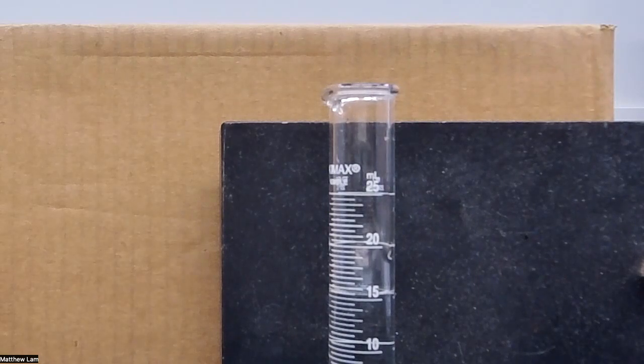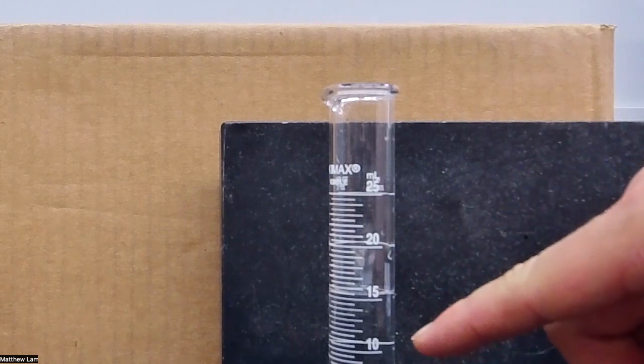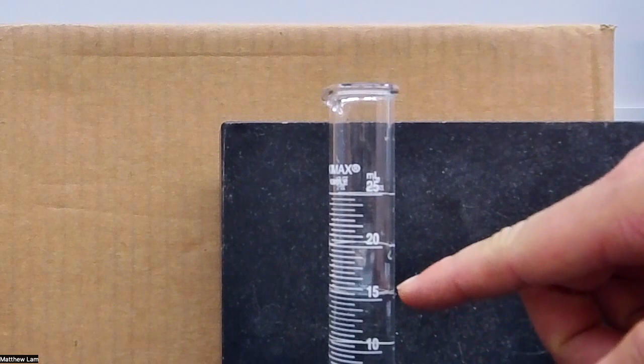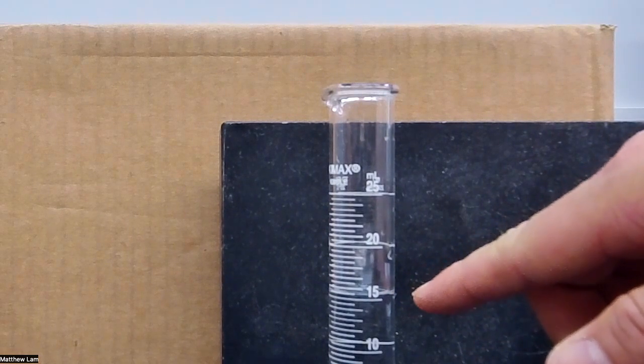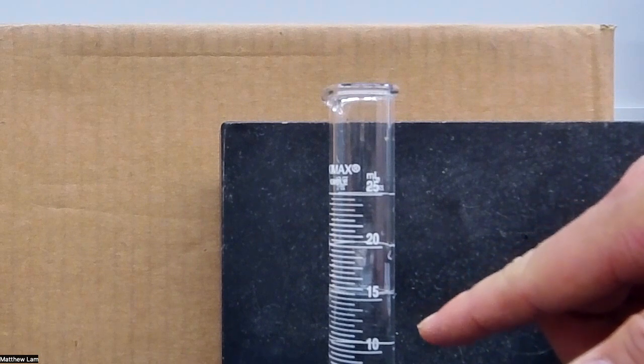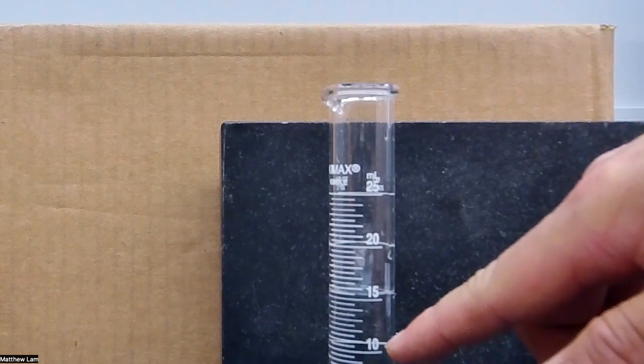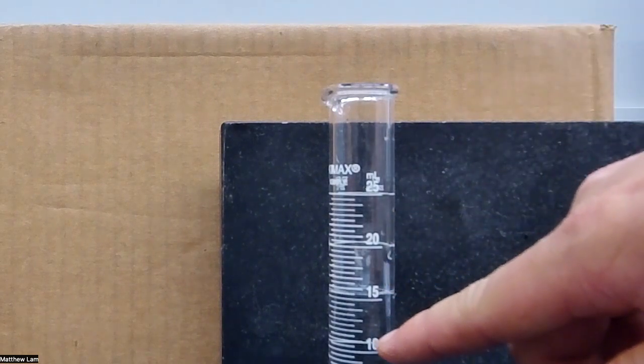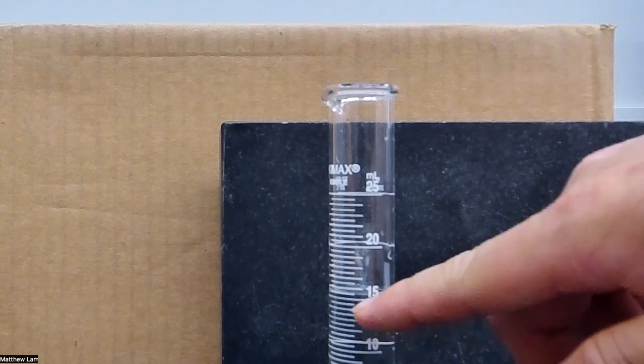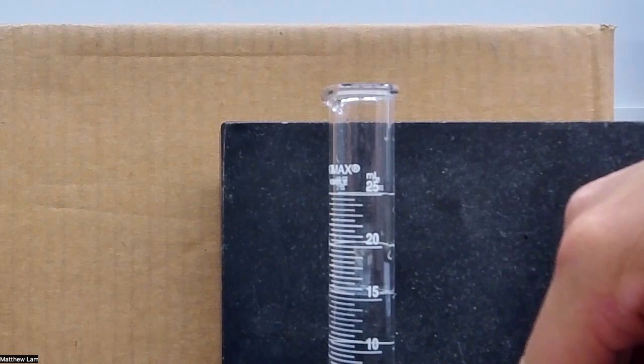Okay, so I put something black behind the graduated cylinder so we can see it a little better. As you can see, there's a volume of water in here. And we want to measure the reading before we add the Teflon ball in. So it seems like the larger ticks are every five mils, the medium ticks here look like they're every one mil, and the ticks in between are half a mil.